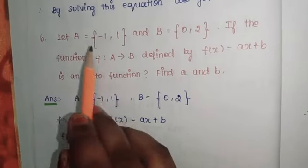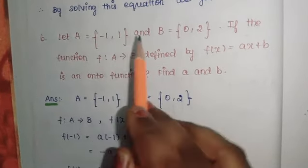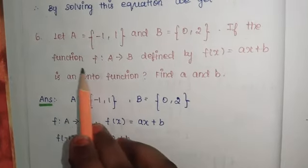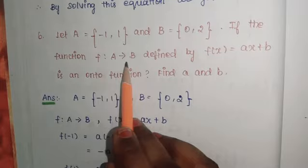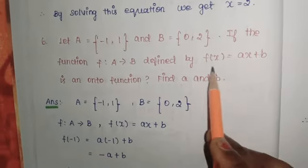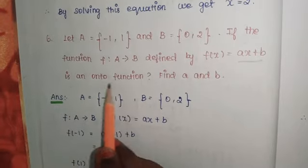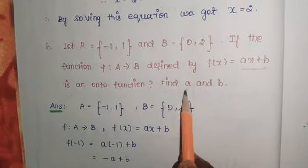Let A = {-1, 1} and B = {0, 2}. If the function f: A → B defined by f(x) = ax + b is an onto function, find a and b.